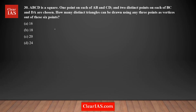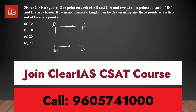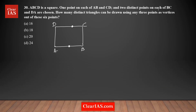ABCD is a square with one point on each of AB and CD, and two distinct points on each of BC and DA. So there are two distinct points here — I am selecting two points here on BC and DA. Total, you have six points in the square.